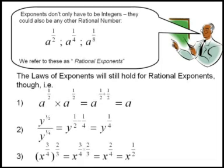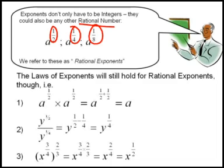Exponents don't only have to be integers. They could also be any other rational number, such as a half, a quarter, or even something like 1 over 8. As long as it's a rational number, it could also be an exponent. We refer to these types of expressions as rational exponents.